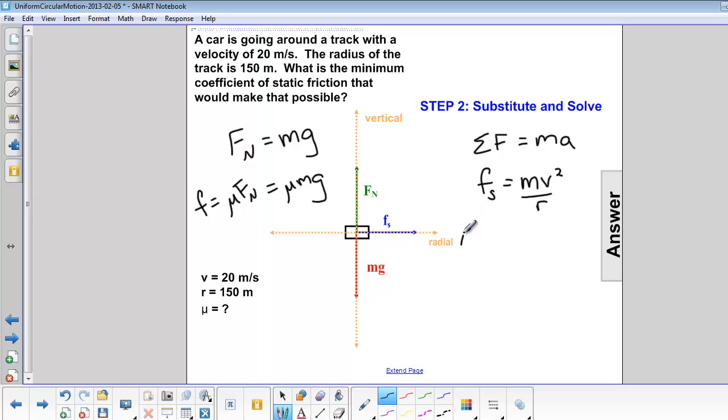So replace force of friction with μmg. Now we can divide both sides by m, and we have μg equals v² over r. Now we can divide both sides by g. So μ is equal to v² over gr.